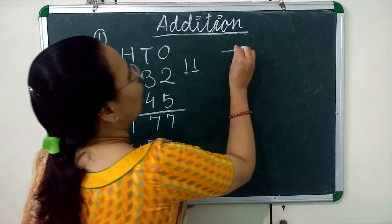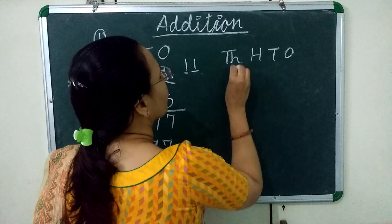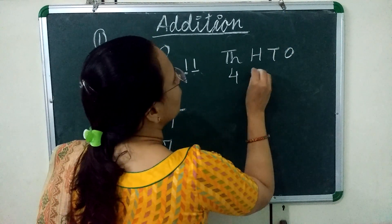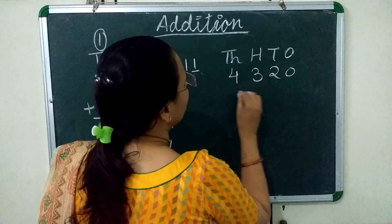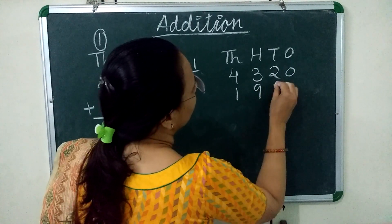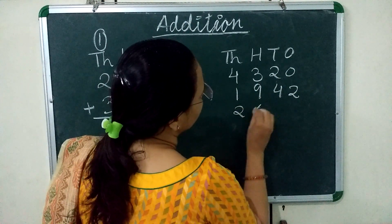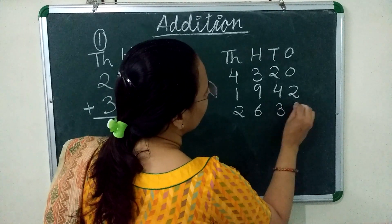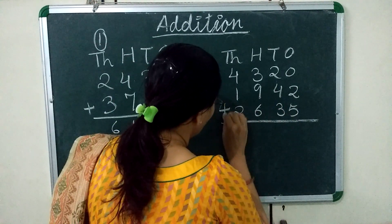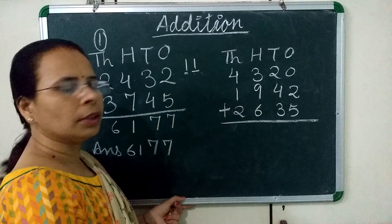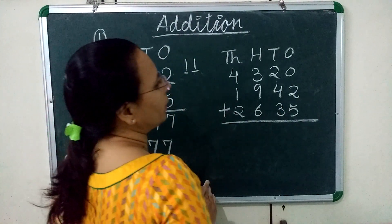Now one more question. I am writing here: 4,320 plus 1,942 plus 2,635. Now we will add these numbers, starting from the 1's place.